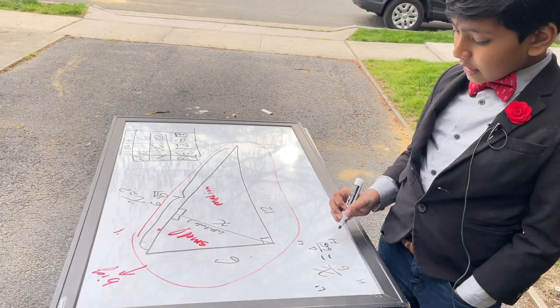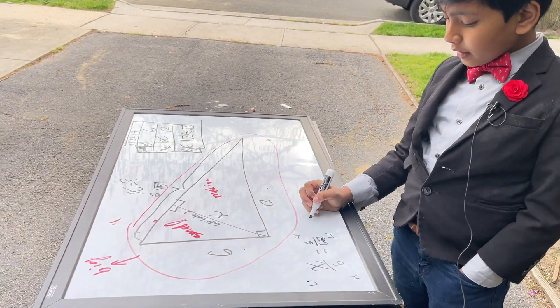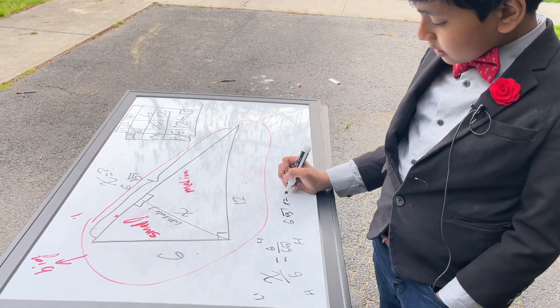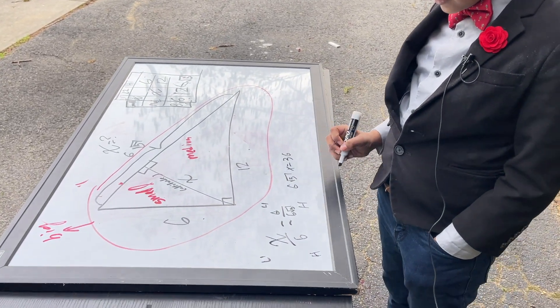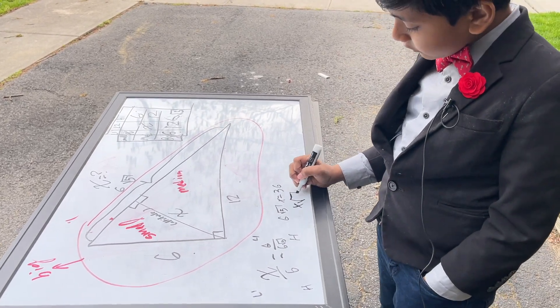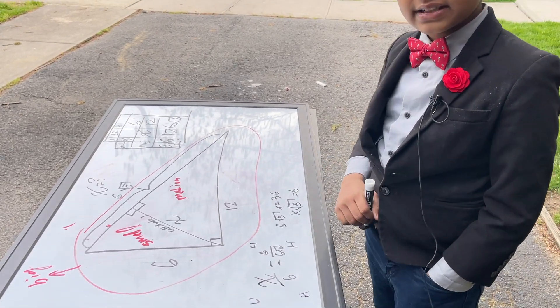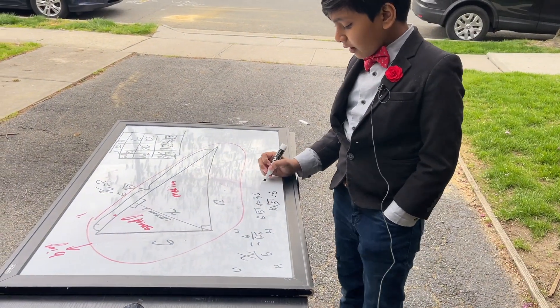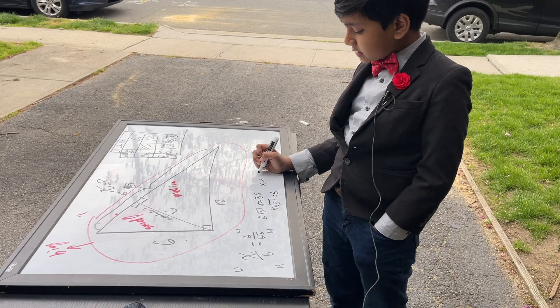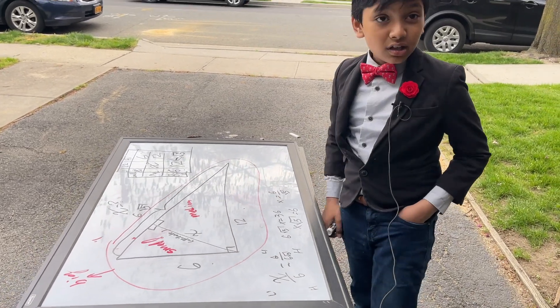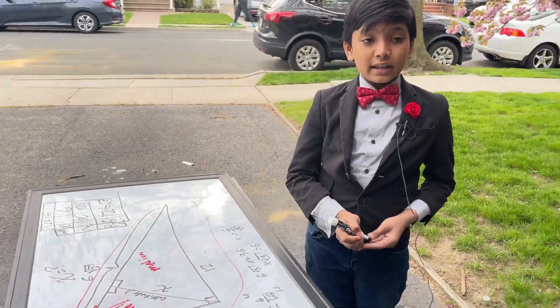This actually gets even simpler from there. After doing cross multiplication, we have 6 root 5 times x equals 36. Dividing both sides by 6, we get x root 5 equals 6. That means x is simply 6 over root 5. That's our answer. Thank you everybody for watching — we'll see you next time.